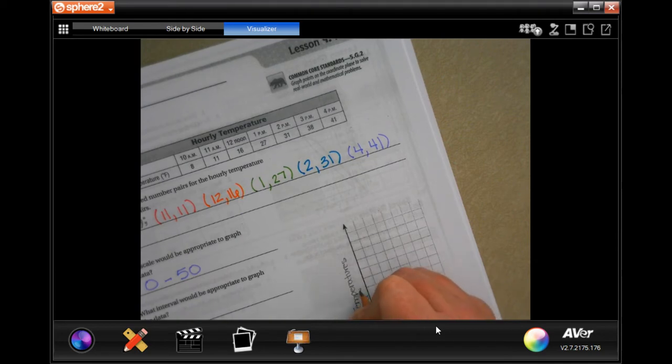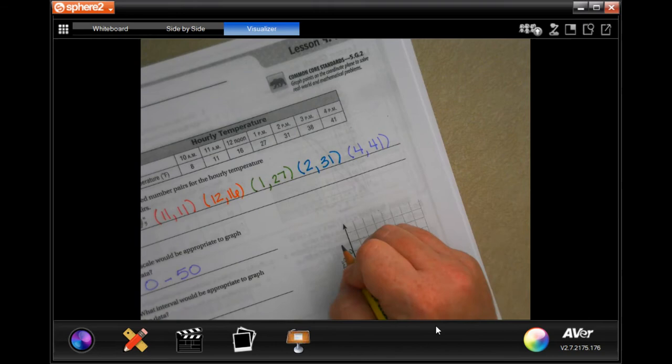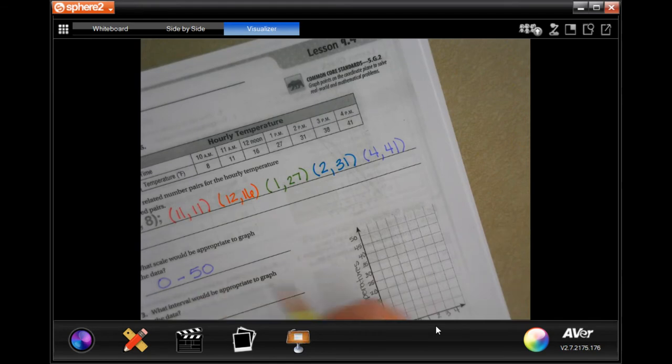Now for the temperatures we said that we're going to do in increments of 5, so we're going to start with 5. So 5, 10, 15, 20, 25, 30, 35, 40, 45, and we said we're going to go until 50. So we were going to go until 50, so I went up to 50.